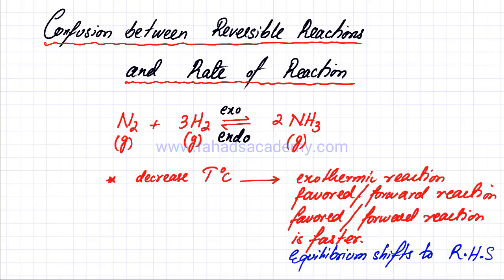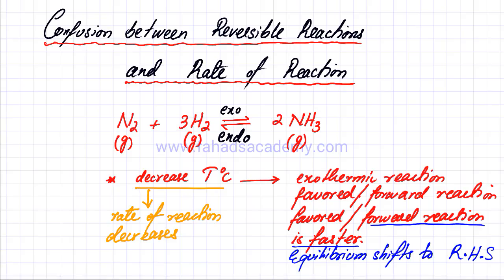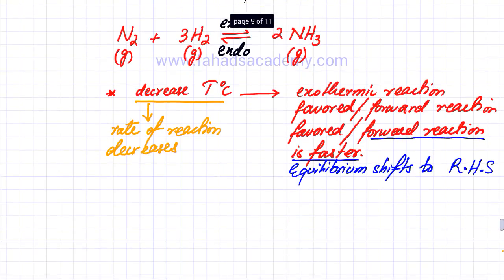Now there's one very major confusion with this term: 'the forward reaction is faster.' If you have studied the rate of reaction, you would know that whenever you decrease temperature, your rate of reaction always decreases. So the confusion is: equilibrium states the forward reaction is faster, whereas according to the rate of reaction, whenever you decrease temperature, your rate of reaction is always going to decrease.